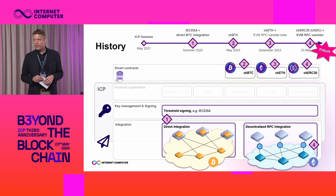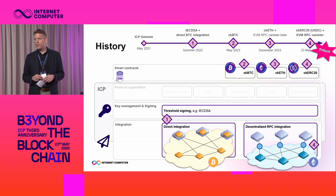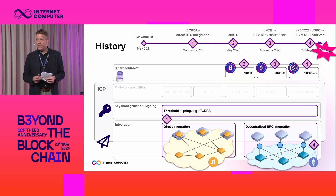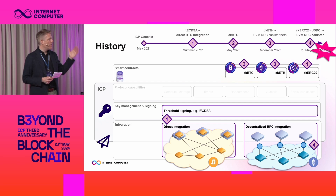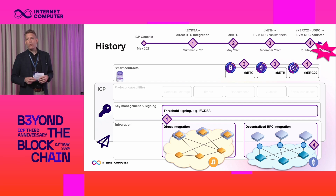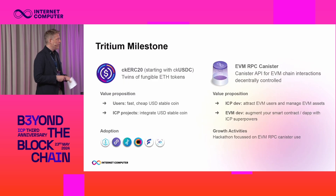Today we're very happy to also celebrate the birth of ckERC-20 tokens. The first one is ckUSDT, which is obviously a very well-known stablecoin that has been missing from the ICP ecosystem. This is what the so-called Tritium milestone will bring us.